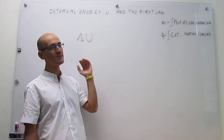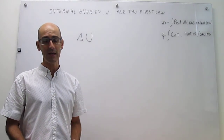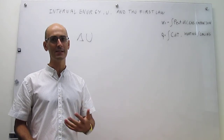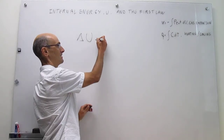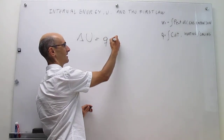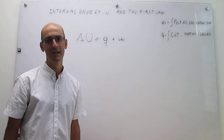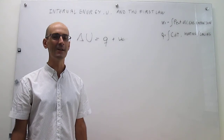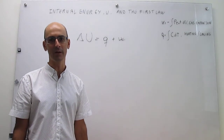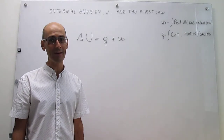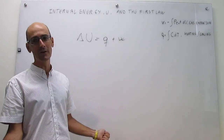Since the internal energy is a measure of the total energy of an object, and we know that energy can only be transferred as either heat or work, the first law naturally arises. Changes to the internal energy are going to be the sum of the energy transfer as work and the energy transfer as heat. That is the first law, and that is how simple this is. This considers the fact that energy cannot be created or destroyed — only transferred — and the only two types of energy transfer are heat and work. That is your first law.